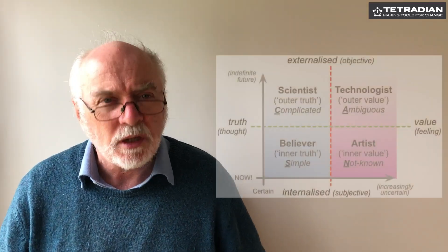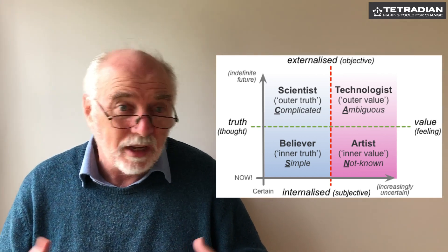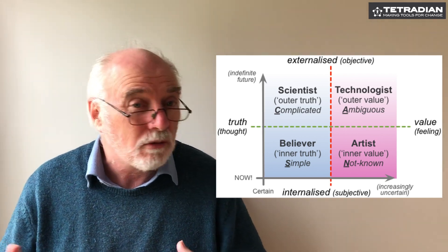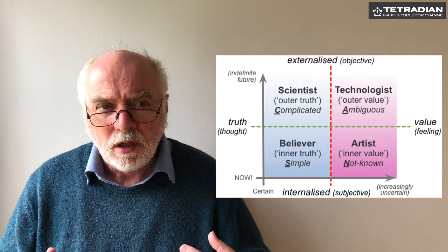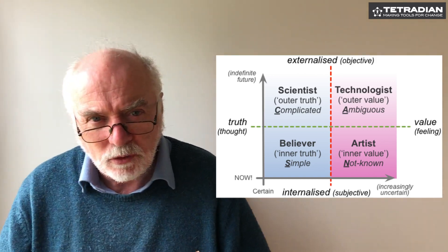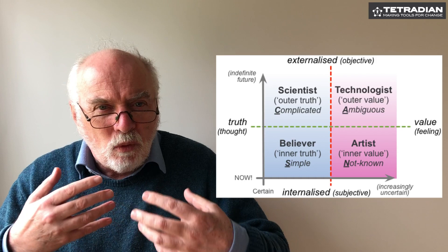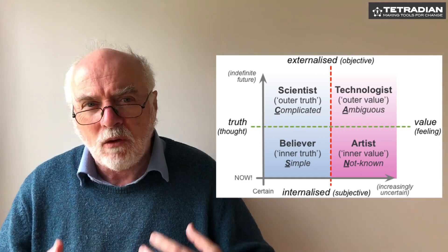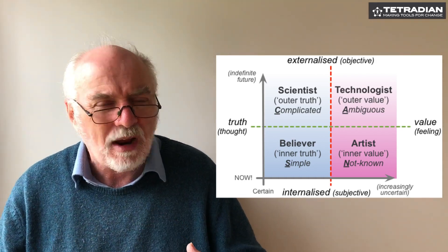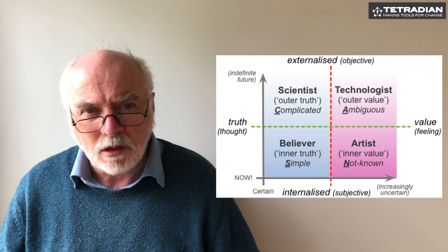Another useful tool in terms of skills and mapping out skills is what we call a skill modes map. This is a very simple two-axis framework, historically derived from the work of Carl Jung, but we often describe it as the swamp metaphor, because it's about needing different ways of working, ways of thinking, different ways of interacting at different stages in any kind of work.